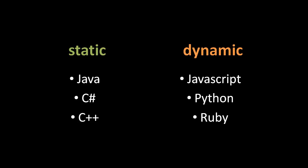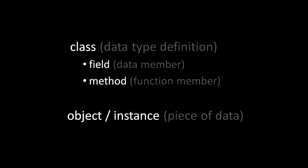Most other object-oriented languages use what's called class-based inheritance. A class is simply a definition of a data type, and each class is defined by the members which make it up. Members come in two basic kinds: fields and methods. Fields are the data members — the data which actually makes up the type. For example, a cat class could be made up of a string for its name, a number for its age or remaining lives, and perhaps other fields for weight and color. So a class defines a compound data type composed of other pieces of data.